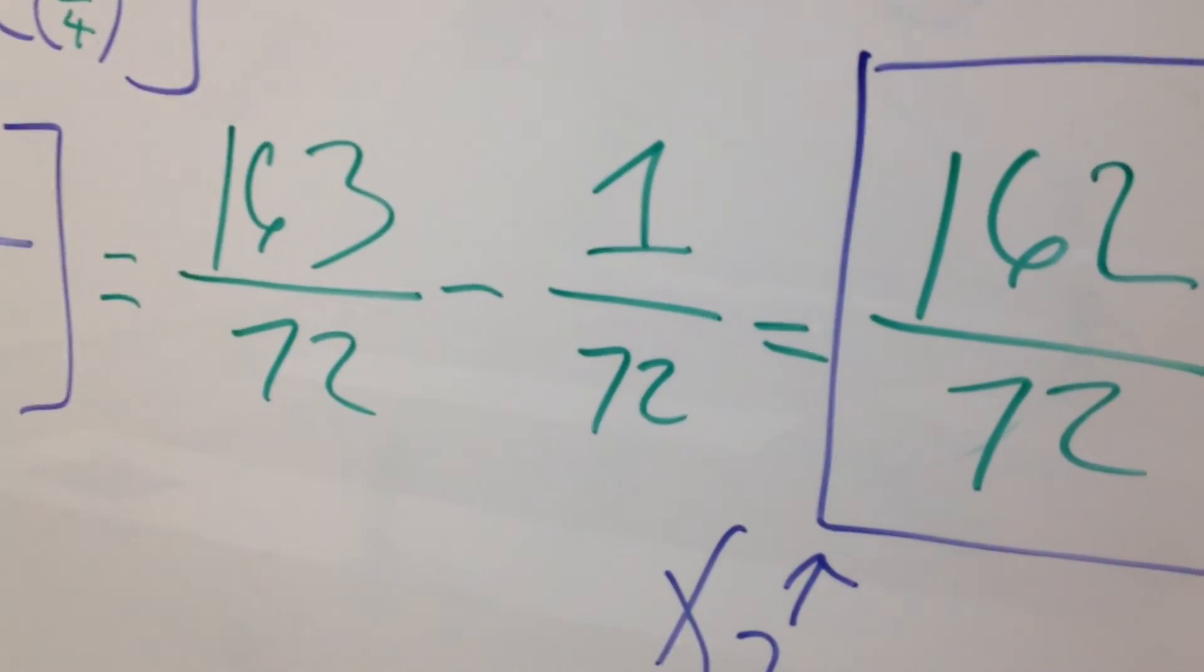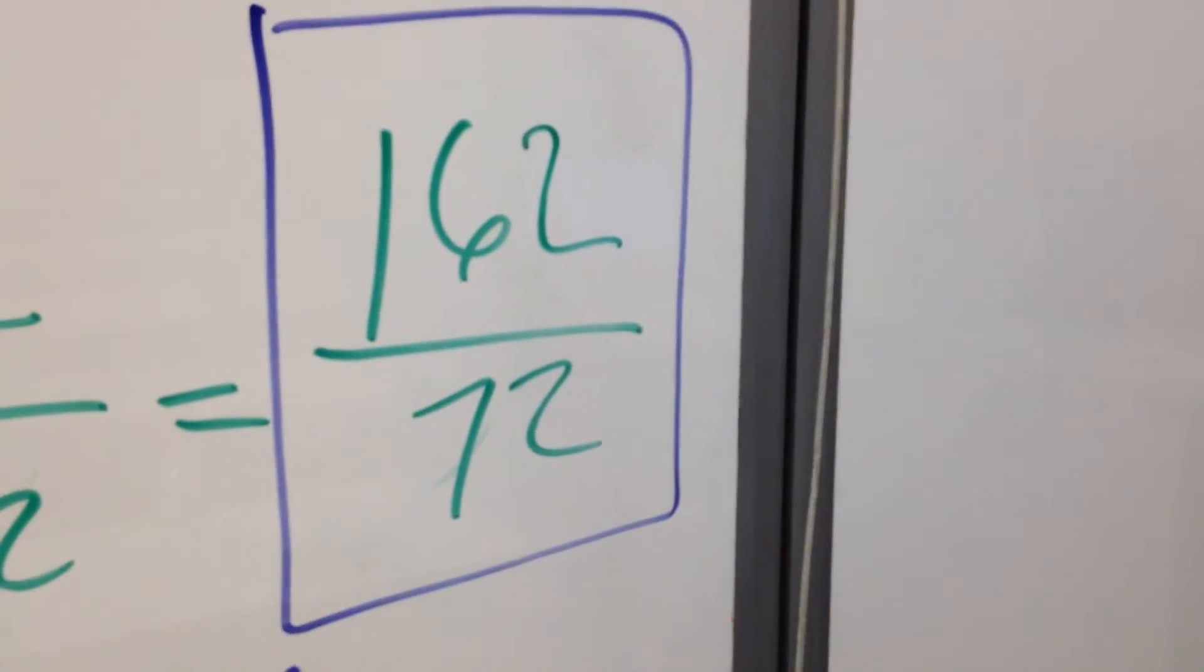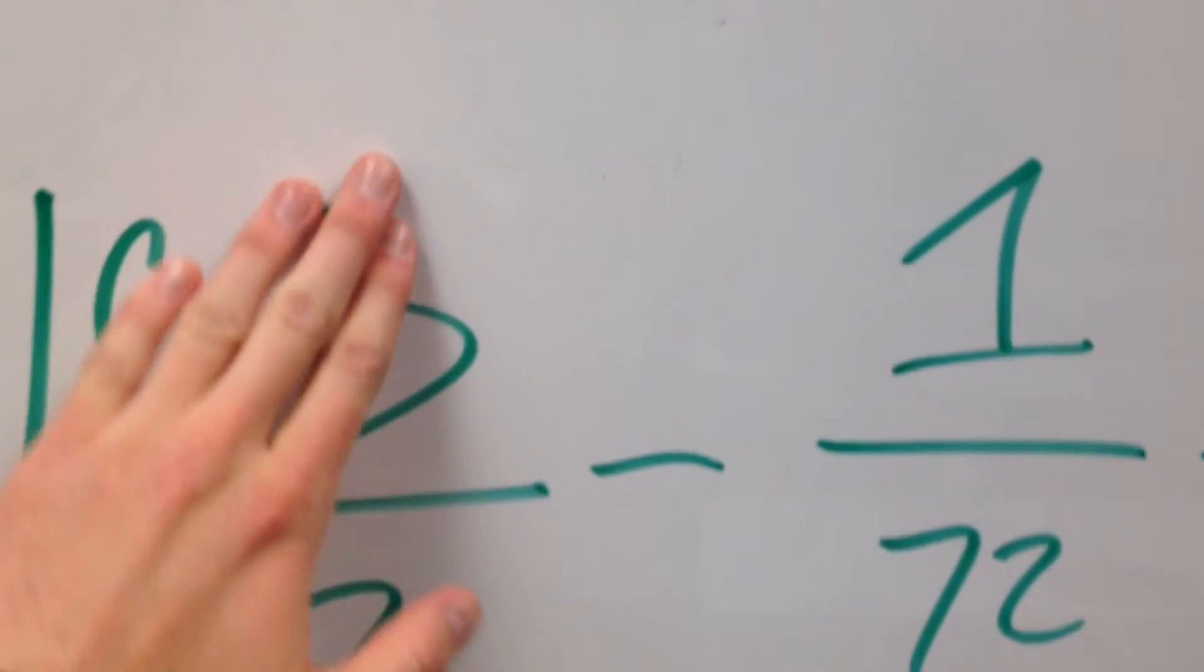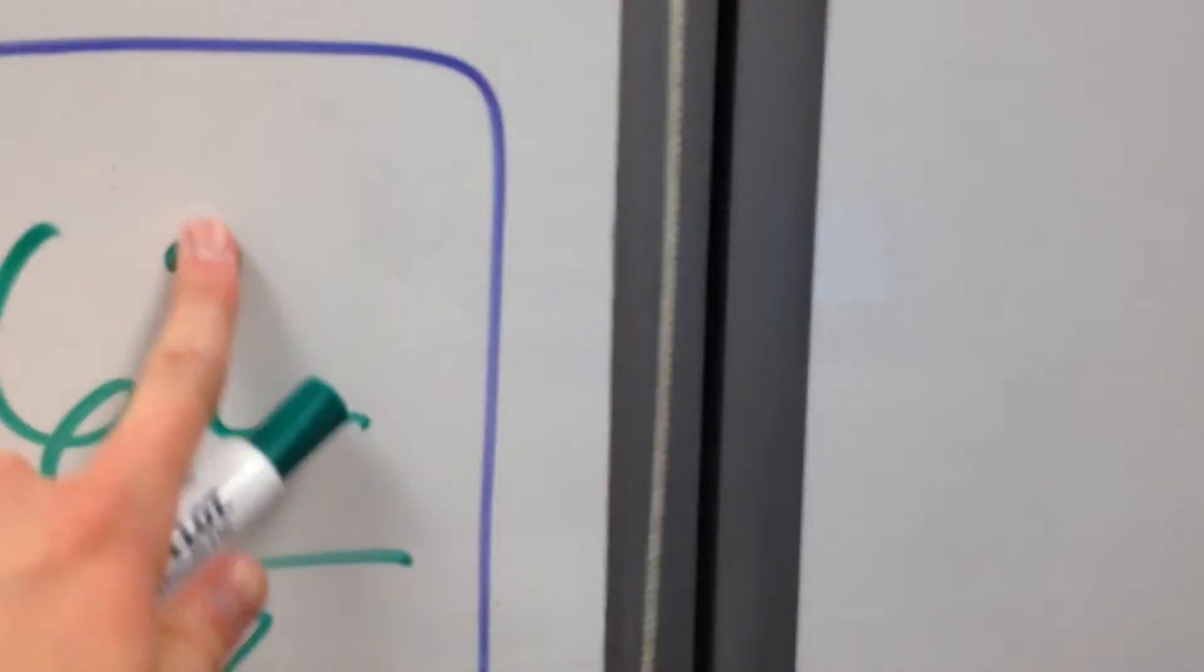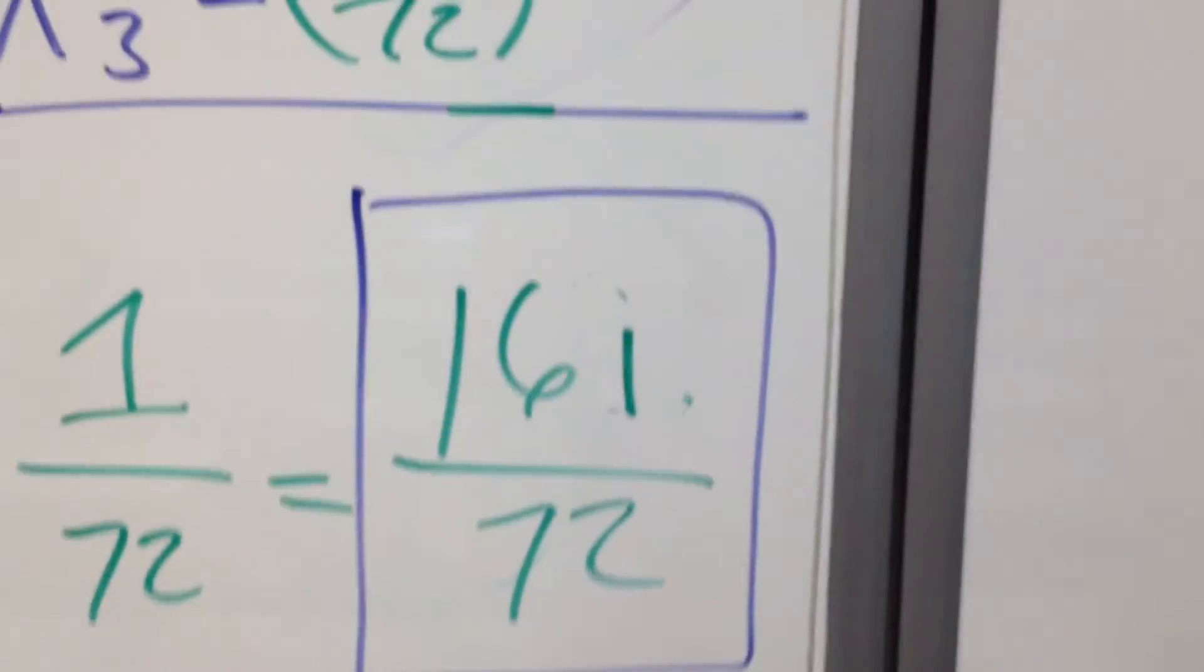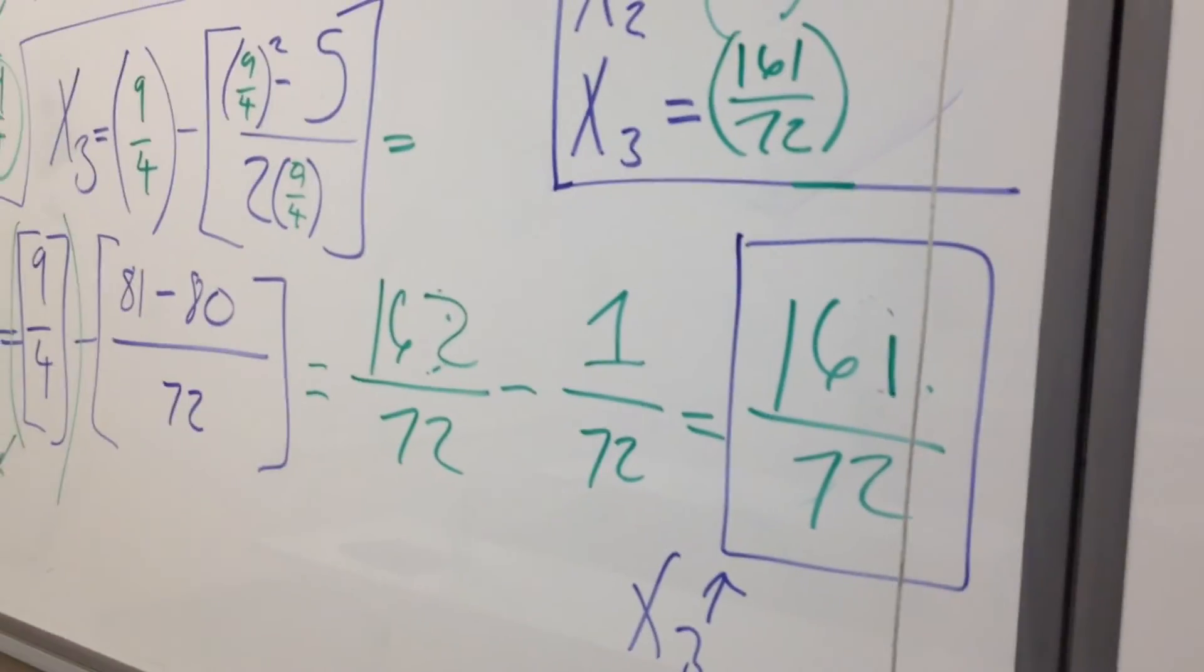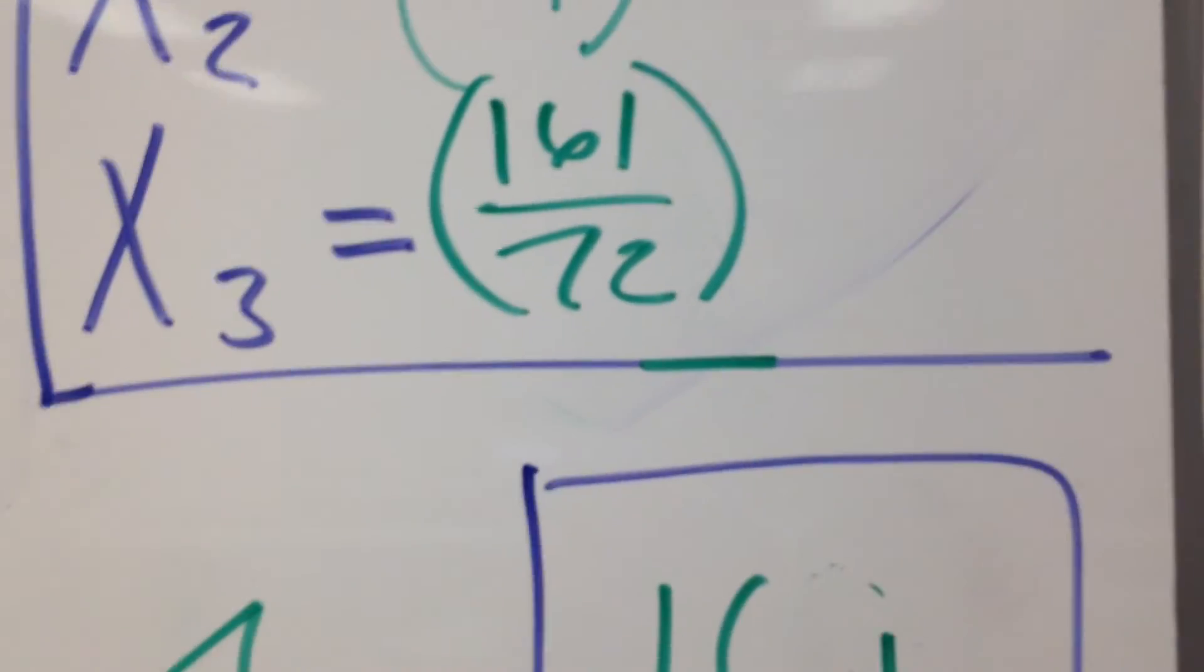I need to make a quick addendum to the end of that video. You notice I said our x₃ is 162/72, then wrote it as 161/72. Well, 161/72 is actually the correct answer. This was a mistake on my part - I should have written this as being 162, and then 162 - 1 as being 161, which gives us our final answer of x₃ = 161/72. I didn't want to refilm the entire end for that one little error. So I apologize, but yes, our x₃ is 161/72.